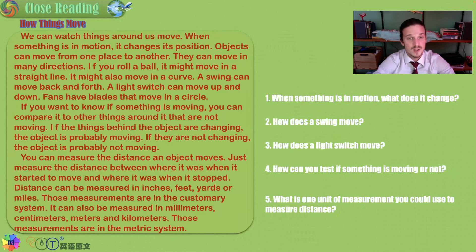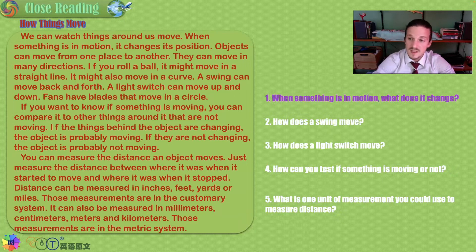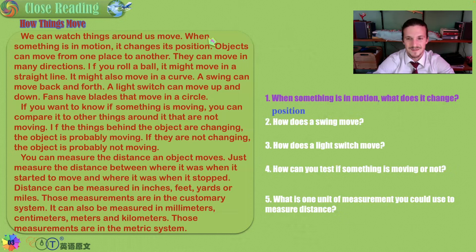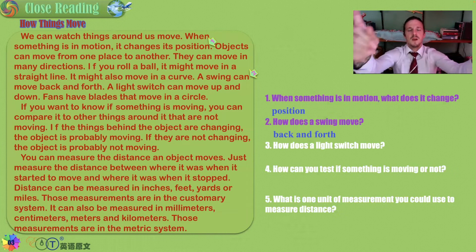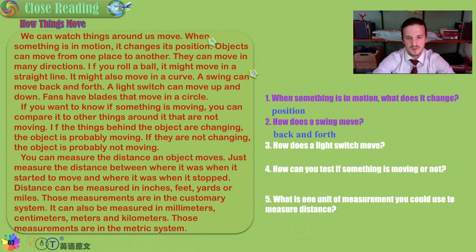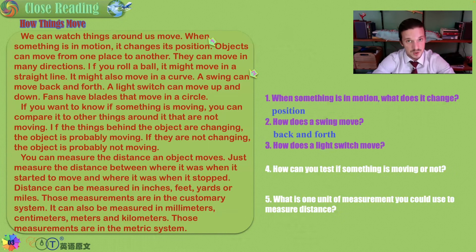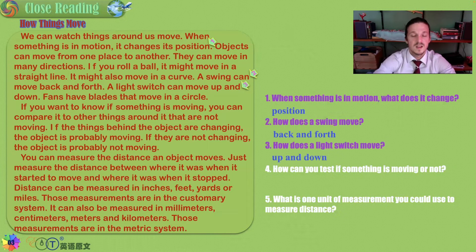Now let's answer some questions. When something is in motion, what does it change? Its position. How does a swing move? A swing moves back and forth. How does a light switch move? On, off, on, off — it goes up and down.